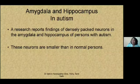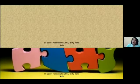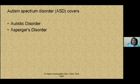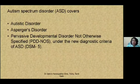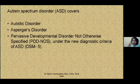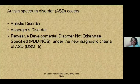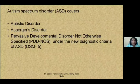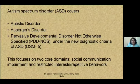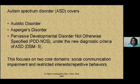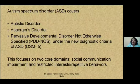We move on to our next section — co-morbidity in autism. Under the latest DSM-5, the Diagnostic and Statistical Manual of Mental Disorders, 5th edition, only three conditions fall under autism spectrum disorder: Autistic Disorder, Asperger's Disorder, and Pervasive Developmental Disorder not otherwise specified. This focuses on two core domains: social communication impairment and restricted and repetitive behavior.